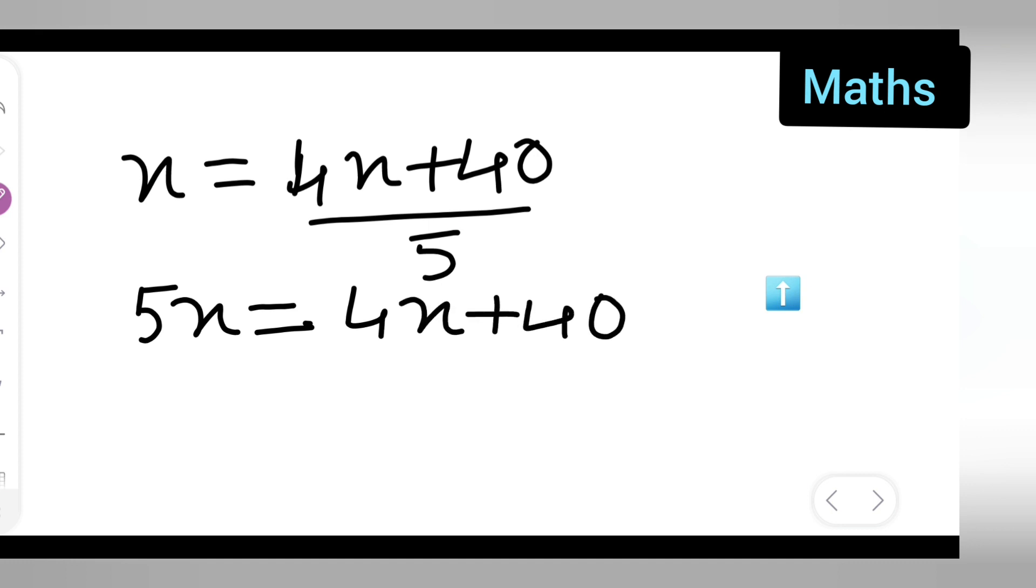Now variable term will come on one side, so 4x I will take to the left side, so it will become minus 4x. So write down 5x minus 4x equals 40.